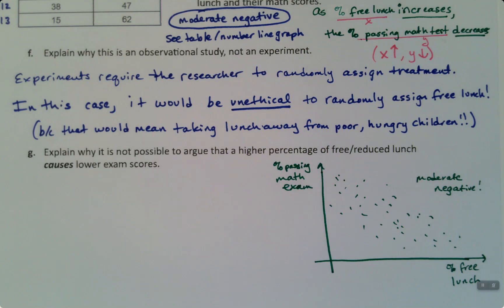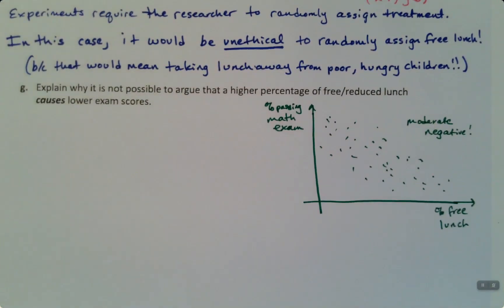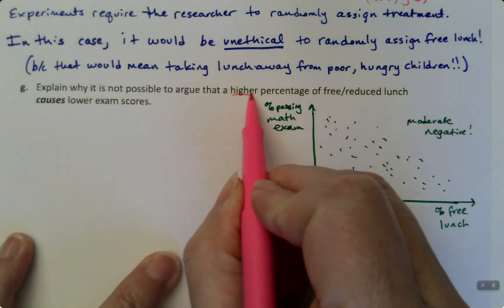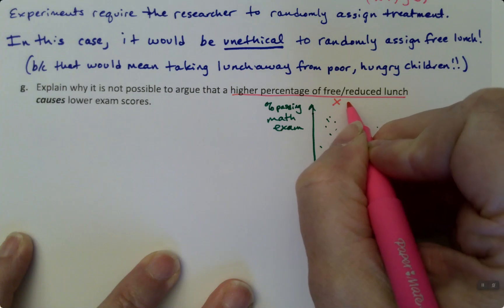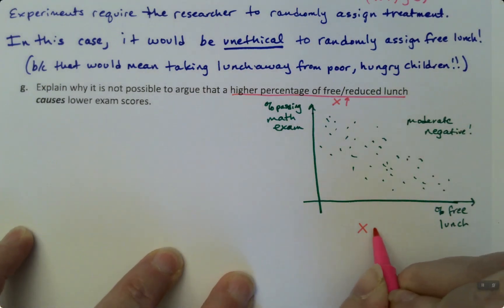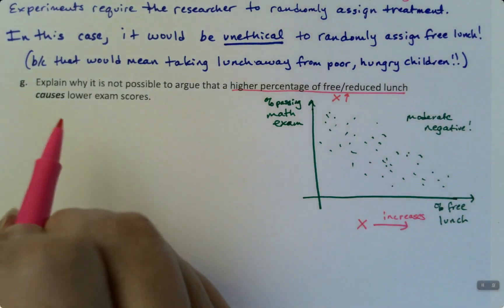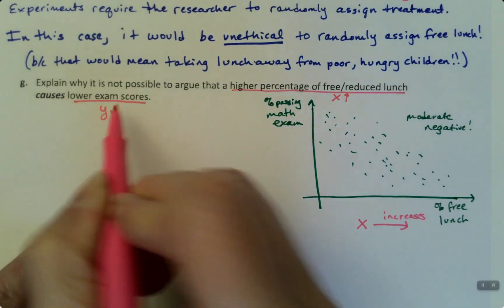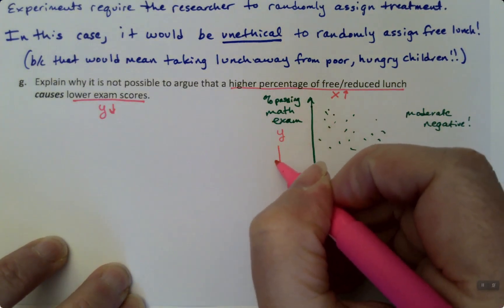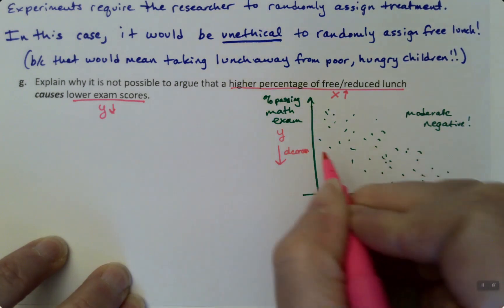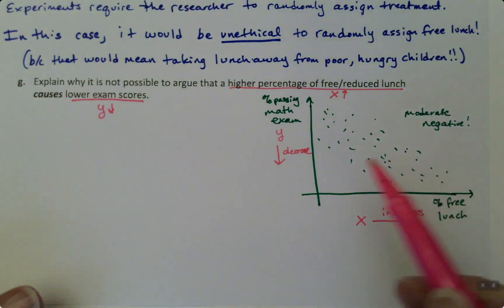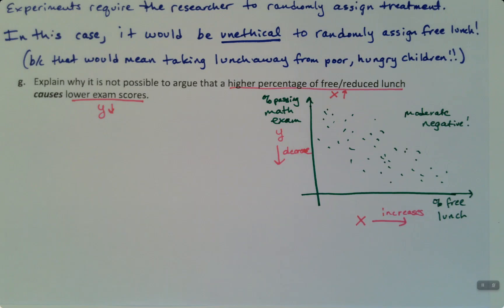Now, why is it not possible to argue that a higher percentage of free reduced lunch causes the lower exam scores? So I just want you to see what this is saying. Higher percentage of free reduced lunch means as x goes up, you're moving this way on the graph. As x increases, you're moving to the right. Then the lower exam scores, y goes down, which is right here. You can see y decreasing. So as x goes up, y goes down.